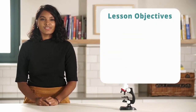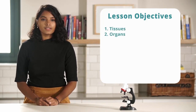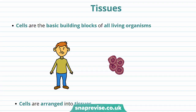Hi guys, in this video we'll be discussing tissues, organs and organ systems, and finally a summary. In order for our bodies to function, cells need to work together, and to do this there needs to be some level of organisation. In this video I'll be talking about the different levels of organisation.